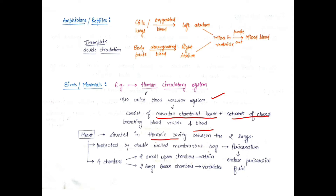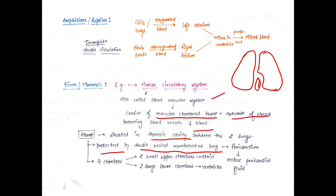The human heart is situated in the thoracic cavity between the two lungs, slightly towards the left side. The heart is protected by a double-walled membranous bag called the pericardium, which is filled with pericardial fluid. The heart is four-chambered: two small upper chambers called atria and two large lower chambers called ventricles.